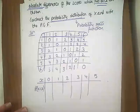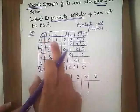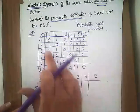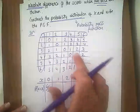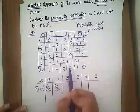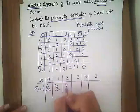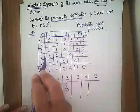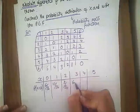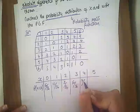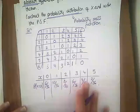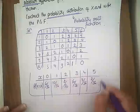The probability of getting zero is 6 out of 36. The probability of getting one is 10 out of 36. The probability of getting two is 8 out of 36. The probability of getting three is 6 out of 36. The probability of getting four is 4 out of 36. And the probability of getting five is 2 out of 36. That is our probability distribution done.